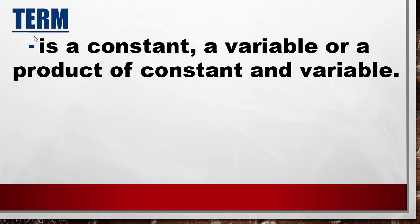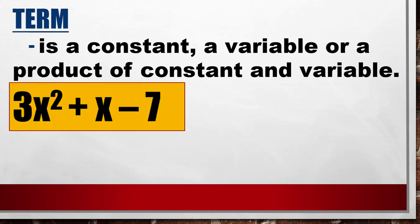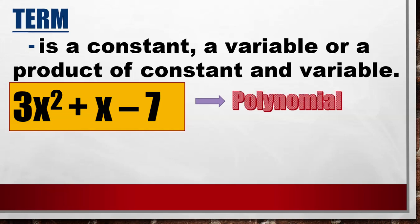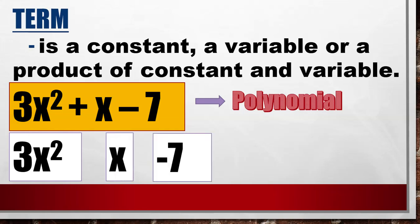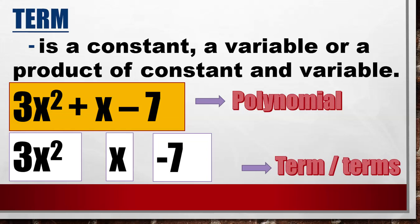A term is a constant, a variable, or a product of a constant and variable. For example, in the polynomial 3x² + x − 7, we have three terms: 3x² is the first term, x is the second term, and negative 7 is the third term.